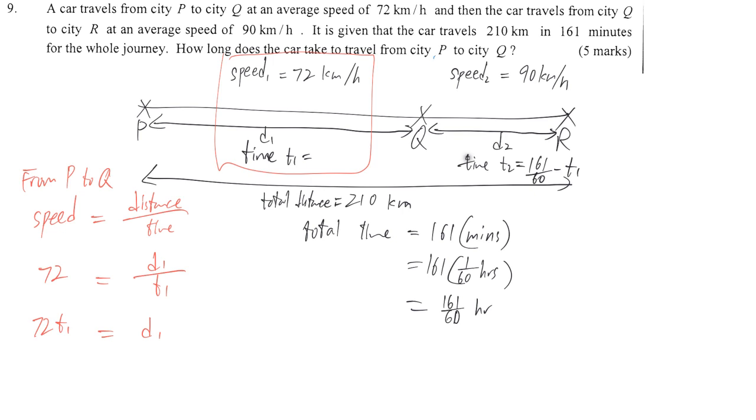And then another part from Q to R, we do similar thing. So from Q to R, this is speed is equal to distance divided by the time again. The speed is 90. The distance is D2 over the time, 161 over 60 minus T1. So D2 is equal to 90 times this stuff.